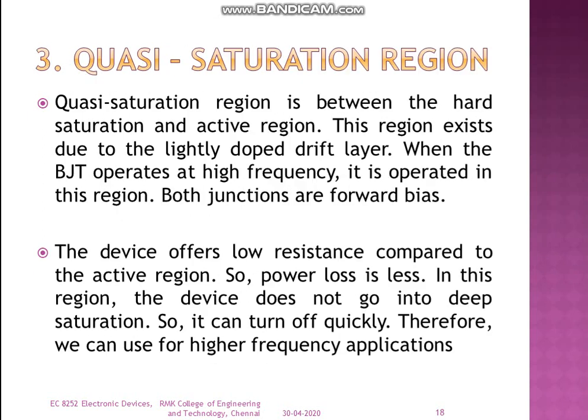The quasi-saturation region lies between the hard saturation region and the active region. It exists due to the lightly doped drift layer. The BJT operates at high frequency in this region. Both junctions are forward biased in this region. The device offers low resistance compared to the active region, so power dissipation is less. The quasi-saturation region mode can be used for high-frequency applications.